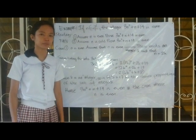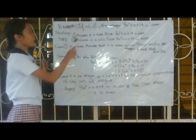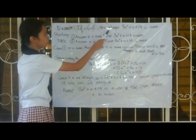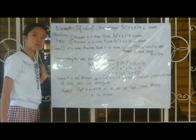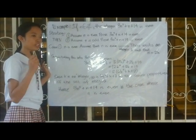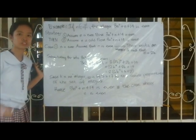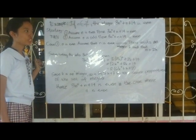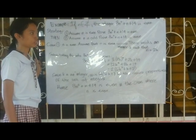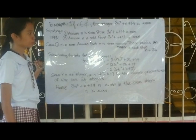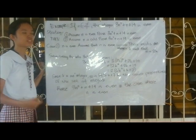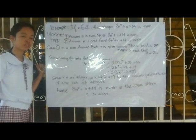Let us proceed to our example: For any integer n, the expression 3n² plus n plus 14 is even. To prove this, our strategy is: first, assume n is even and prove 3n² plus n plus 14 is even. Then assume n is odd and prove 3n² plus n plus 14 is still even. Let's proceed to case 1.